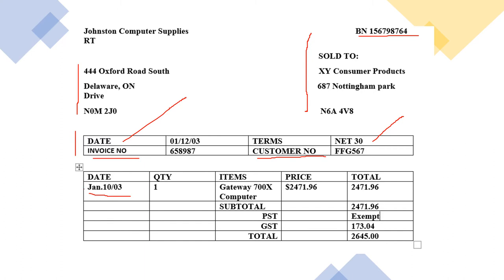This date explains when that transaction took place. You have the quantity and you have the item, which is a Gateway 700X computer. You have the price. To get the total, you take the quantity — which is one — times the price, and you get that total.